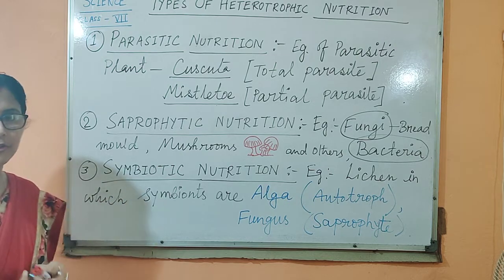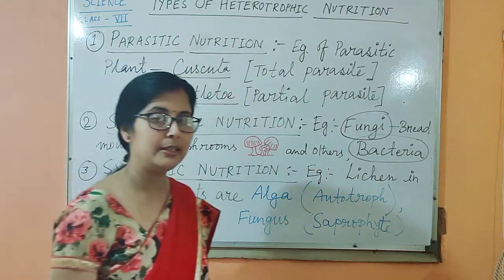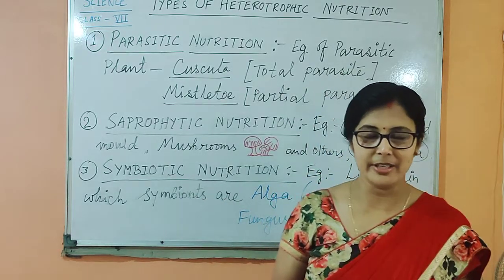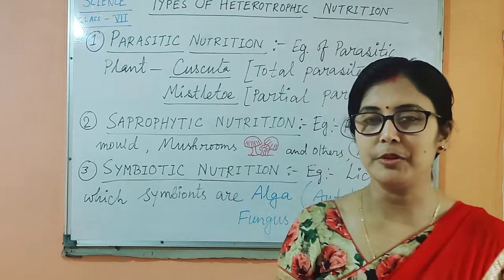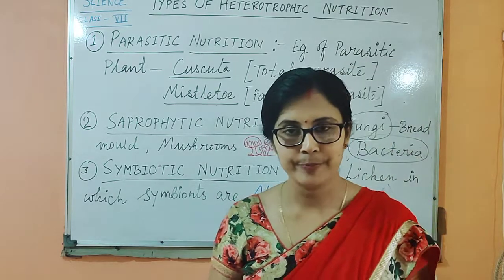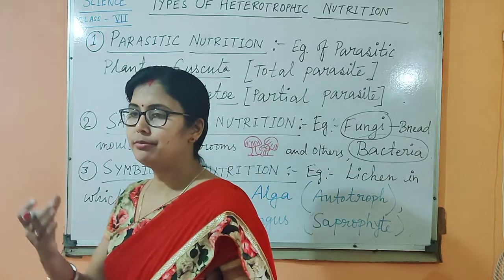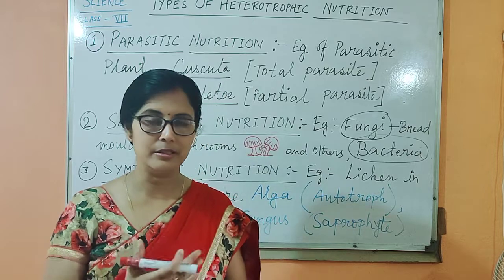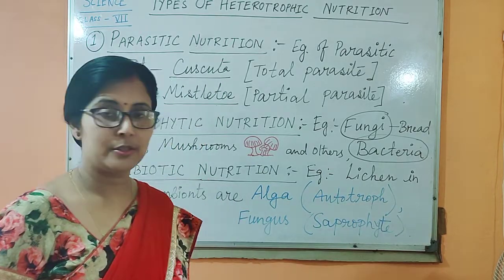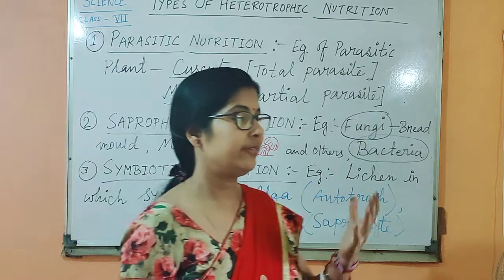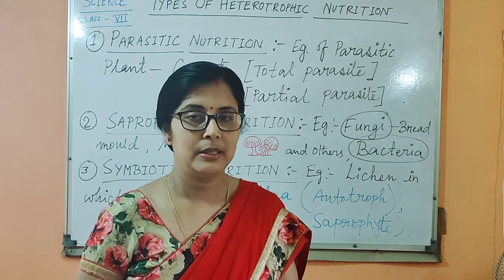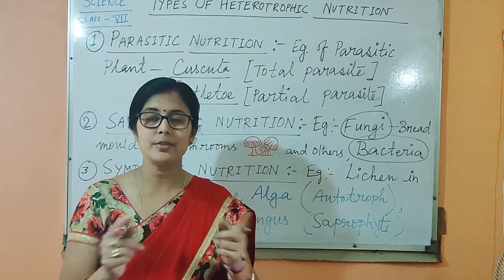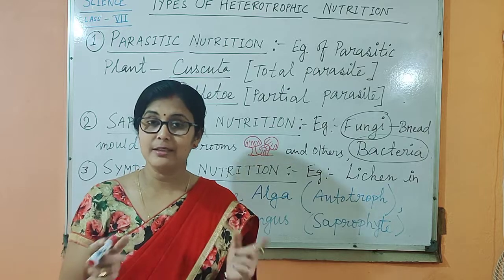We now move to the next category: symbiotic nutrition. Many of you know this term already. An example is lichen. Lichen is a relationship between an alga and a fungus. Lichen grows mainly over tree trunks, the surface of hills and mountains, on rocks, or even on walls. This is a symbiotic relationship in which both organisms depend on each other and both get benefited.